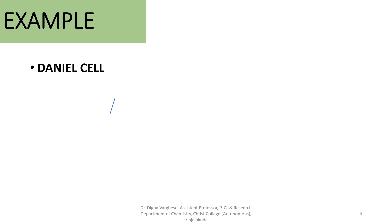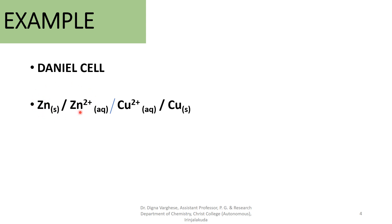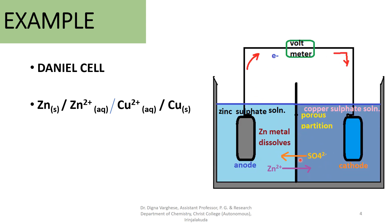An example of a reversible cell is the Daniel cell. The cell representation of the Daniel cell is: Zn | Zn²⁺ || Cu²⁺ | Cu. The left-hand side is the oxidation electrode and the right-hand side is the reduction electrode. Zinc is the anode (oxidation electrode) and copper is the cathode (reduction electrode). Remember: An Od means anode is the oxidation electrode; Red Cat means reduction electrode is the cathode.